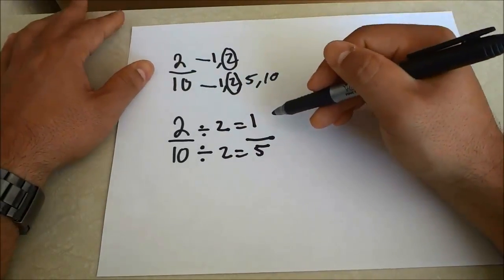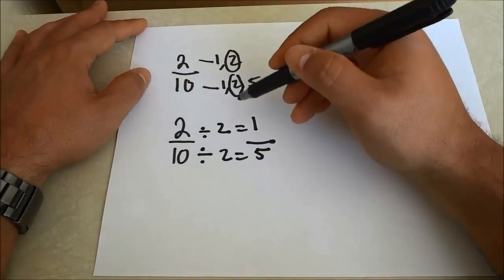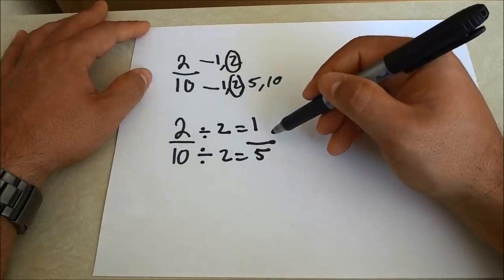So when we take the fraction and we reduce it to the least term, it's 1 over 5.